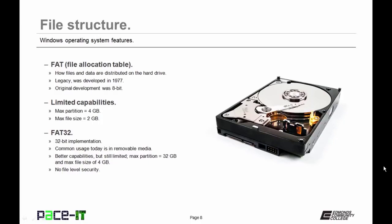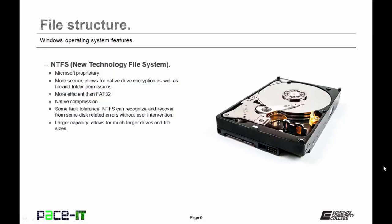That wasn't good enough for Microsoft, so they moved on to NTFS — New Technology File System — which is proprietary to Microsoft. It's more secure, allows for native drive encryption, and provides both file and folder permissions. It's more efficient than FAT32, supports native compression, and has more fault tolerance — it recognizes and recovers from some disk errors without user intervention. It also allows for larger capacity.